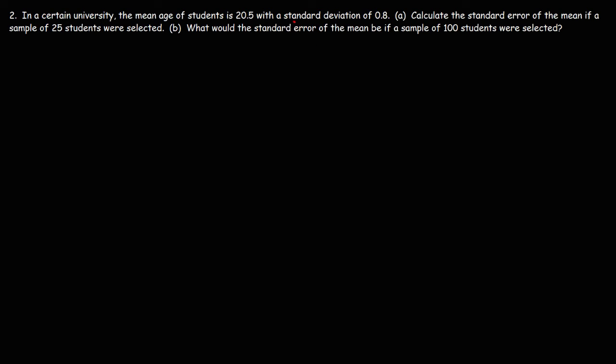Now what type of standard deviation do we have in this problem? Because there's two types. There is the standard deviation of the sample and the standard deviation of the population. 0.8 is the standard deviation of all the students in this university. So that is the standard deviation of the population. And it's represented by the symbol sigma.